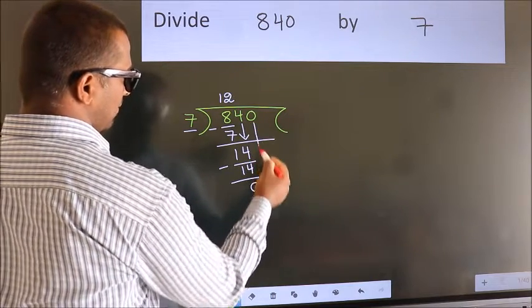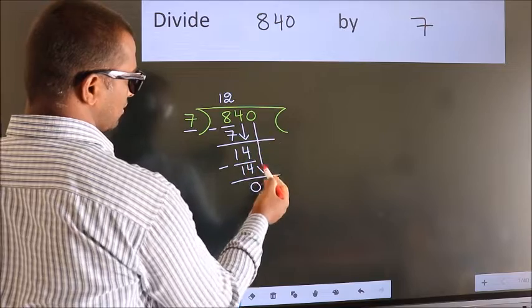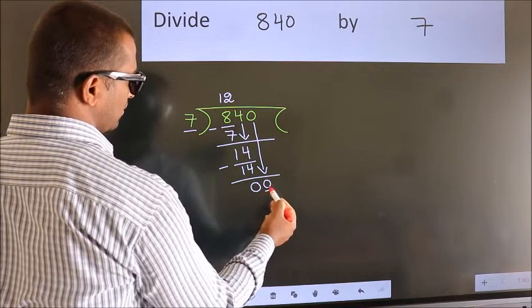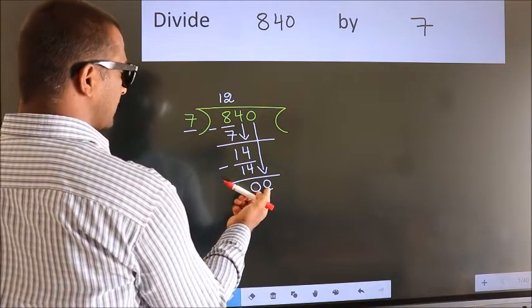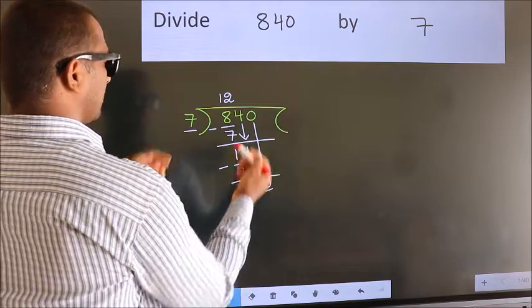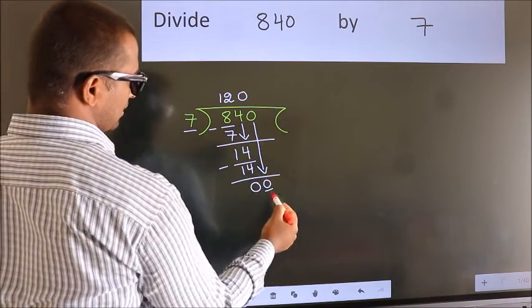After this, bring down the beside number. So 0 down, giving us 0. When do we get 0 in the 7 table? 7 zeros is 0.